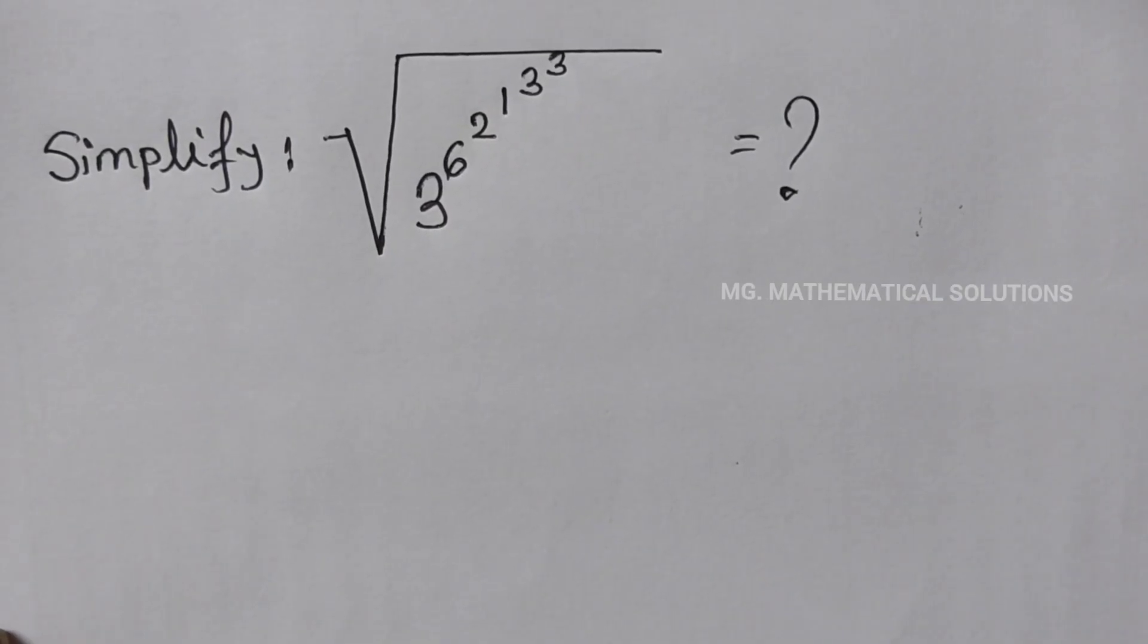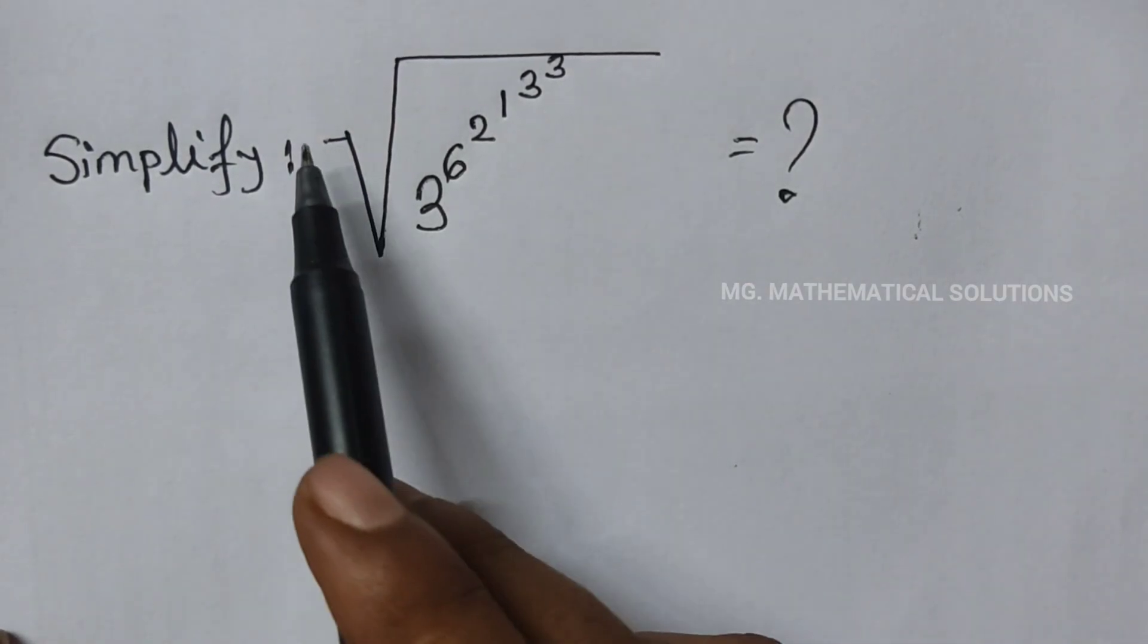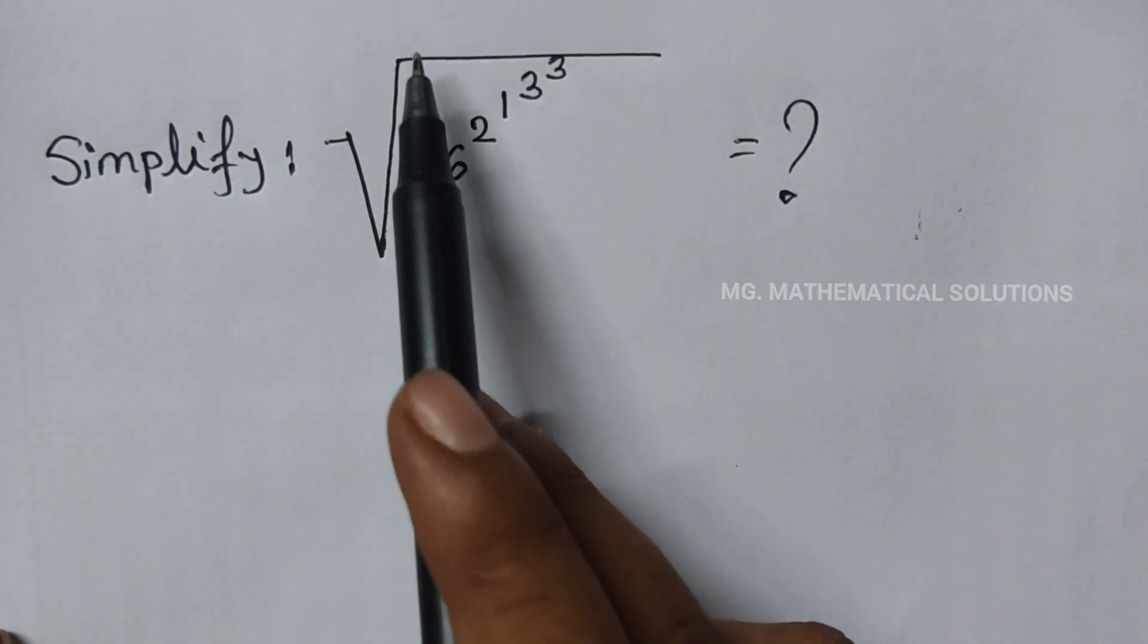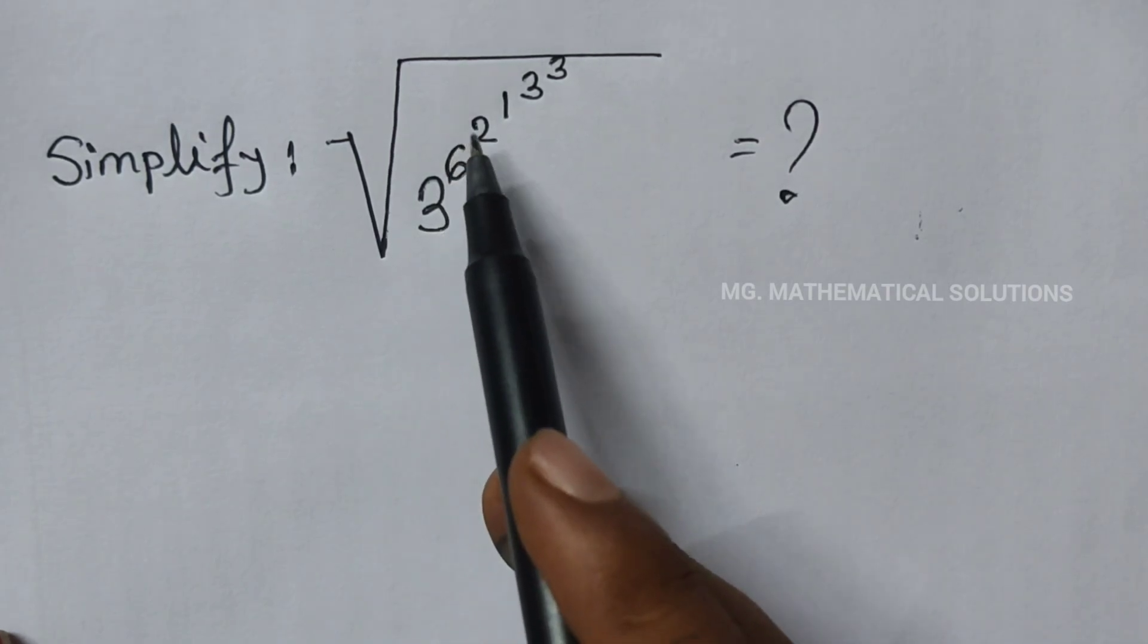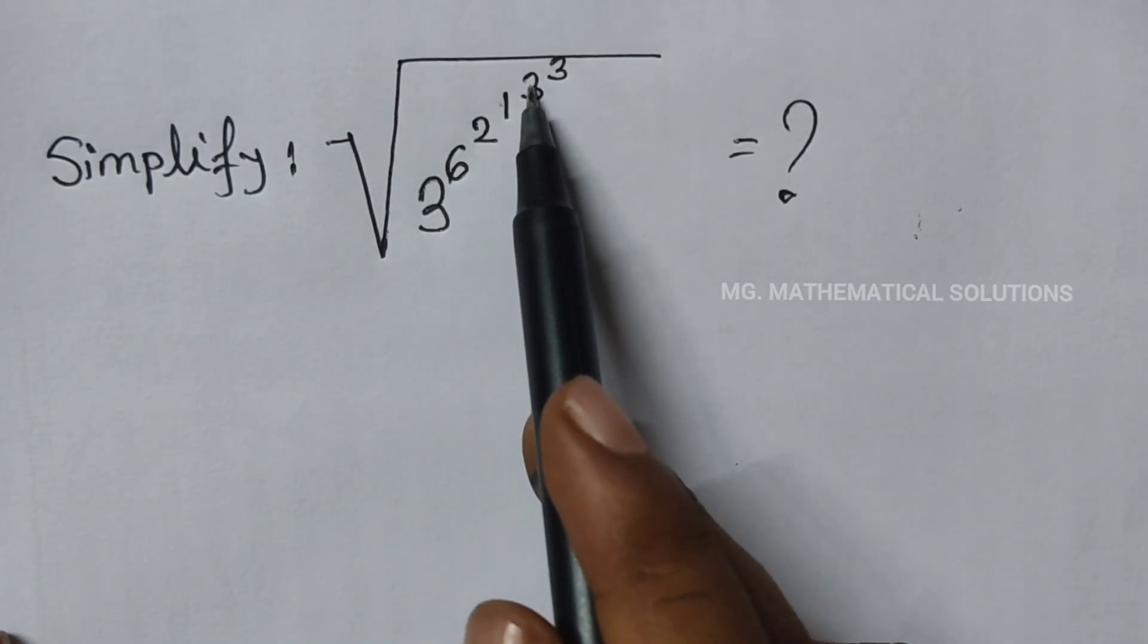Hello students, welcome to our channel MG Mathematical Solutions. Today I solve a square root exponential problem. The question is: root over 3 to the power 6, to the power 2, to the power 1, to the power 3, to the power 3 equals what?